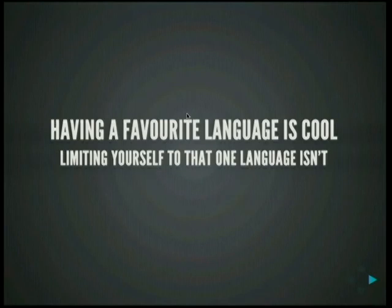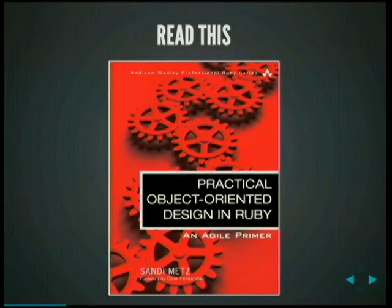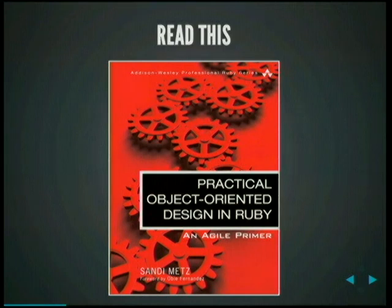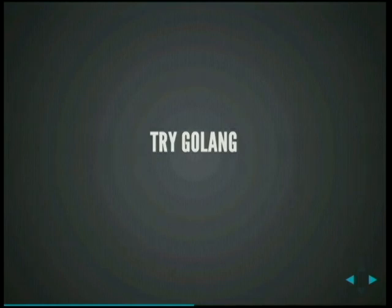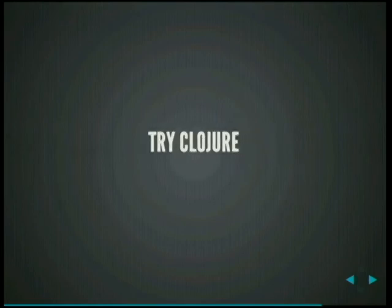Having a favourite language is really cool. Python was my favourite language — it was my first dynamic language. But limiting yourself to that one language isn't so cool. Read this book: 'Practical Object-Oriented Design in Ruby: An Agile Primer.' It basically encompasses a lot of agile stuff and object-oriented design. It does say Ruby, but you can always rip out the Ruby stuff and just think in Python if you really want to. So: try Ruby if you really want, try Golang — I hear a lot of Python people like Golang when they try it; it's quite like Python in some ways. Try Rust, try Clojure, try something else. Try something that is not really object-oriented. Try something functional. Try aspect-oriented programming. Try Prolog.